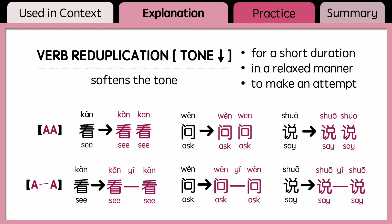When pronouncing two reduplicated verbs together side by side, the first verb is stressed, and the second one that's repeated usually becomes a neutral tone. So it's 看看, 问问, and 说说 with a neutralized tone on the second verb.